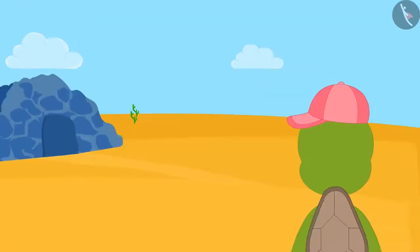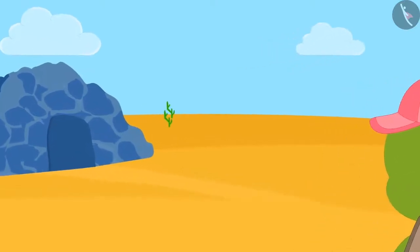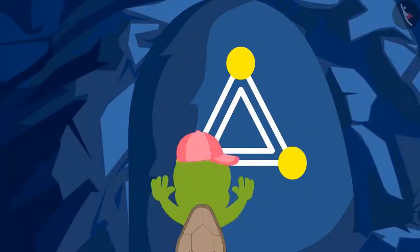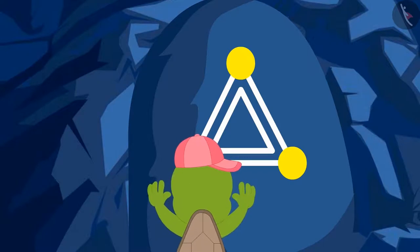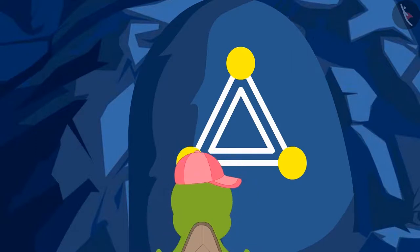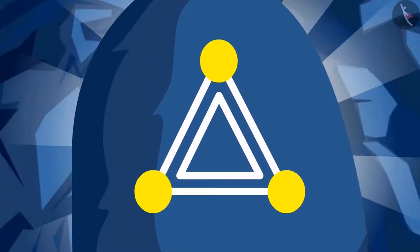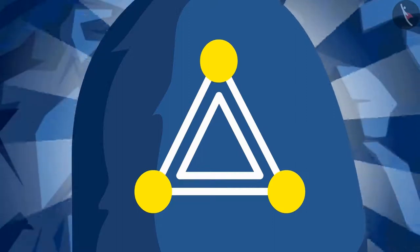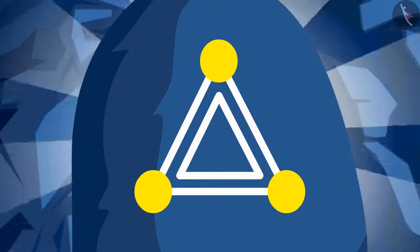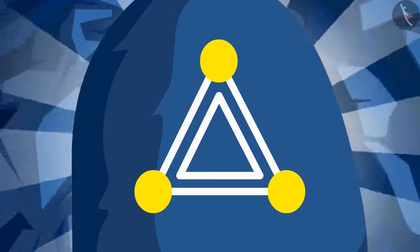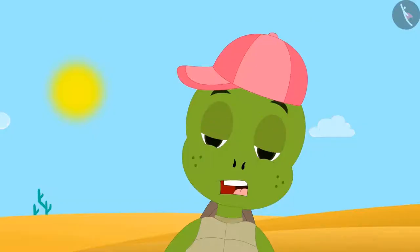One day, Tufan the turtle saw a cave. As Tufan tried to open the door, a voice came from inside. If you want to find the treasure hidden in the cave, you have to open three doors. There is a puzzle on each door. When you find the right answer to the puzzle, that door will open.